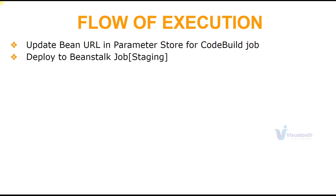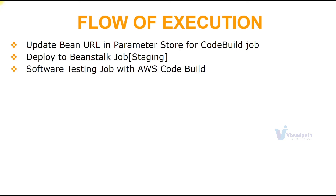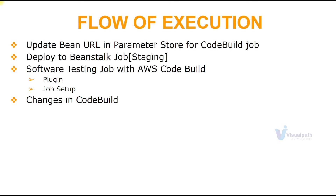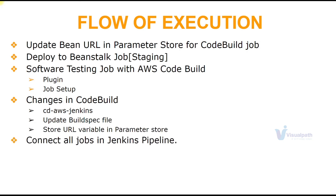Then we set up a Jenkins job to deploy our artifact to the Beanstalk staging environment. Next, we create a software testing job that calls the AWS CodeBuild job which runs software testing — the same job from before but with some changes. First, we need the AWS CodeBuild plugin with IAM authentication. We also switch to the CD-AWS-Jenkins branch; in the previous setup we used the Selenium Autoscript branch, but now we use CD-AWS-Jenkins. We update the build spec file — one key change is it will fetch the Beanstalk URL from Parameter Store. Once all these jobs are in place, we connect them together in a Jenkins Pipeline and test it.